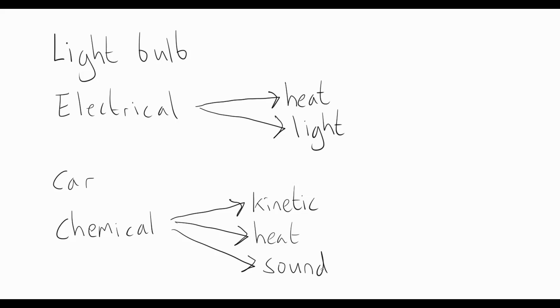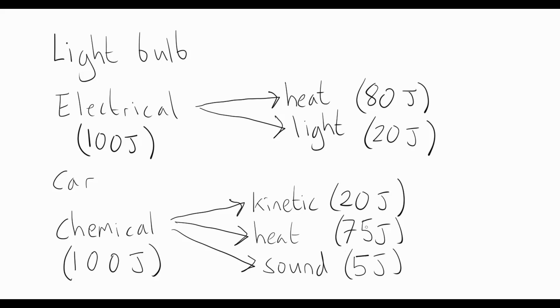It's important to remember that no energy is created. No energy is destroyed. So if, for example, there are 100 joules of energy - remember, we measure the units of energy in joules - let's say there's 100 joules of electrical energy going into this light bulb. There must be a total of 100 joules coming out again. So if the heat were to be 80 joules, that means the light must be 20 joules. No energy has been created. No energy has been destroyed. Likewise, if the chemical energy going into the car was maybe 100 joules, that means that all the energies on this side must add up to 100. So let's just say the kinetic was 20 joules, the heat energy was 75 joules, and the sound energy was maybe 5 joules. We'll see that the whole thing still adds up to 100.